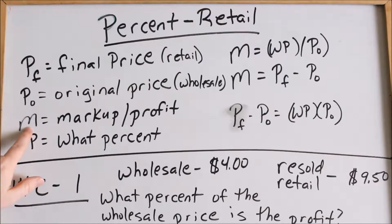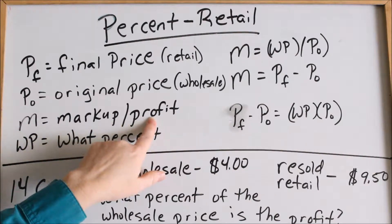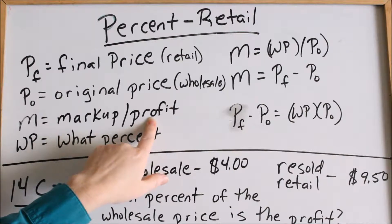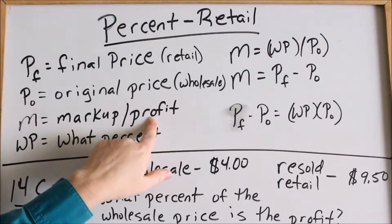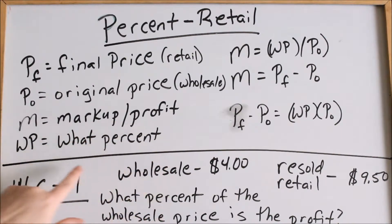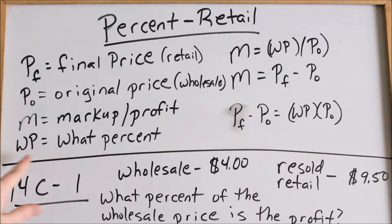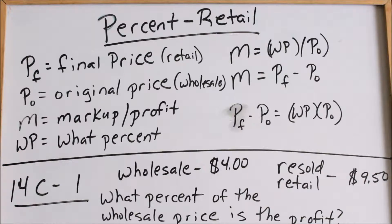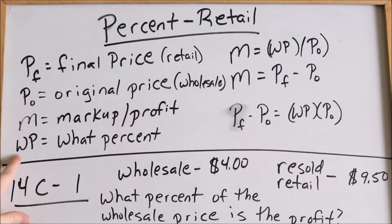The next letter we'll use is M, which stands for the markup or profit the store makes. The furniture store is going to make a profit because they sell that piece of furniture at a higher price than what they bought it at — that's your markup or profit. Then we're going to use WP, which stands for 'what percent' — it's one variable, just like X. The fact that it's two letters shouldn't throw you off. This does not mean W times P; it just means WP, meaning 'what percent.' This is going to be a percentage.